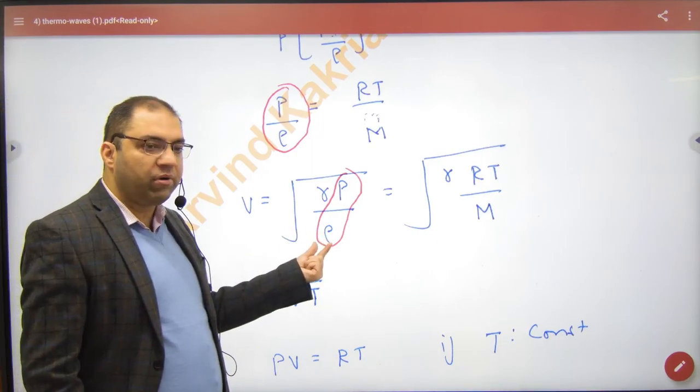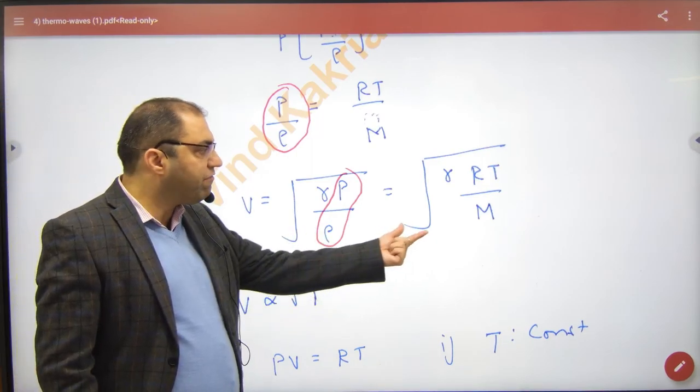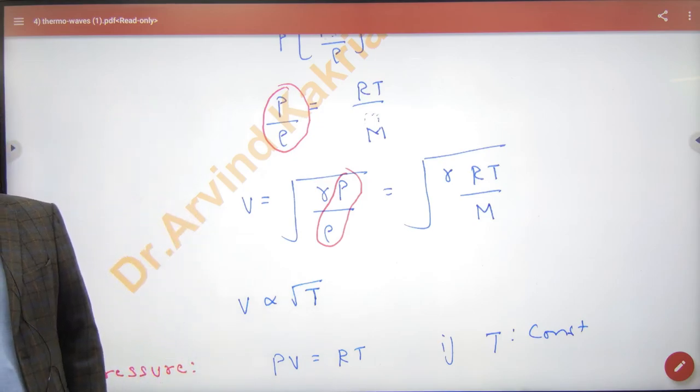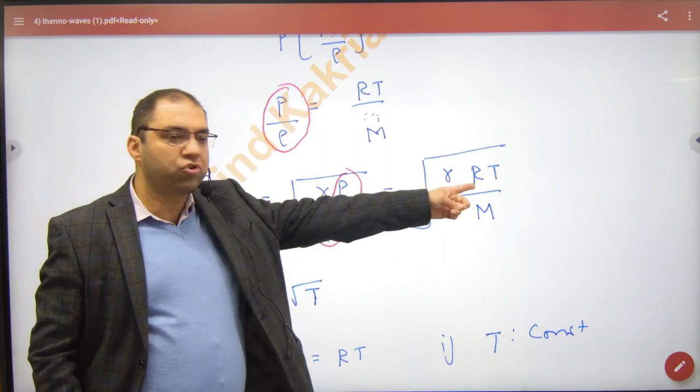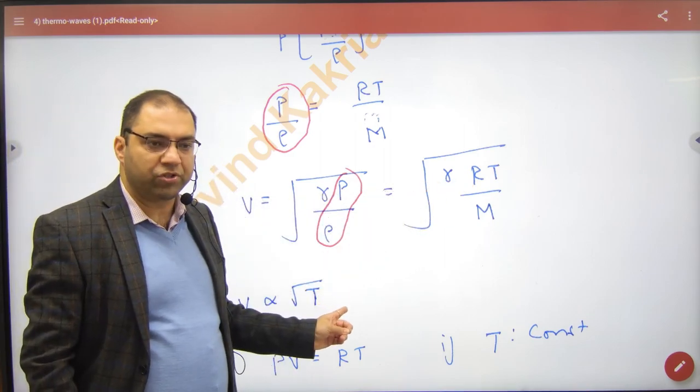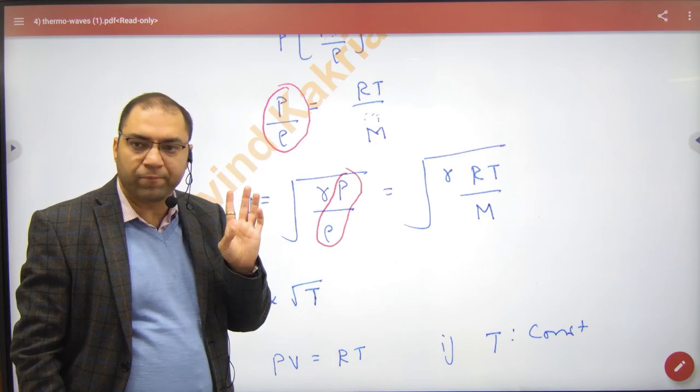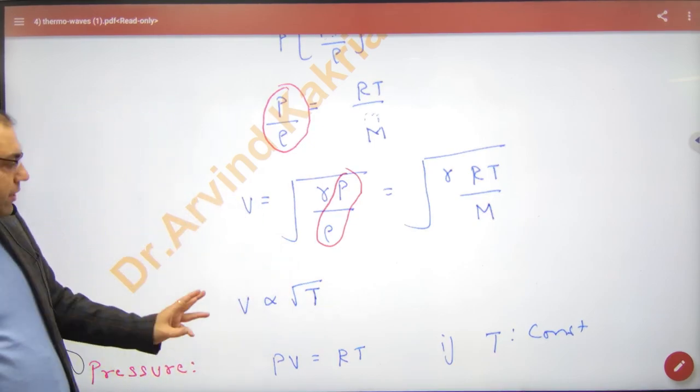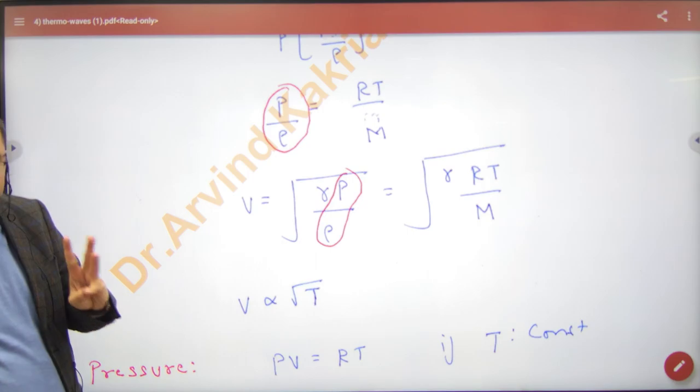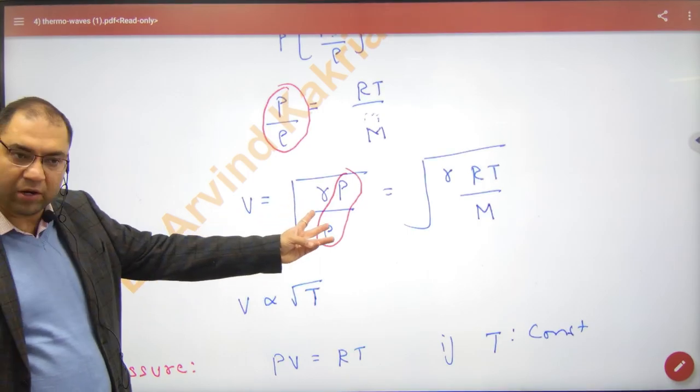Either use the formula gamma P by rho, or use the formula gamma RT by M. Both important formulas, mark them. Velocity is directly proportional to the square root of temperature. Next factor - inversely proportional with density, directly proportional with square root of temperature. And two formulas for sound speed.